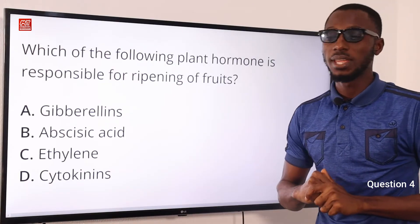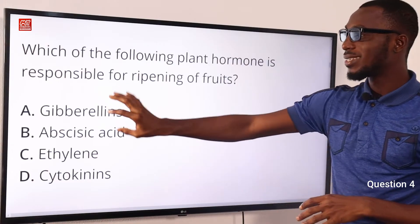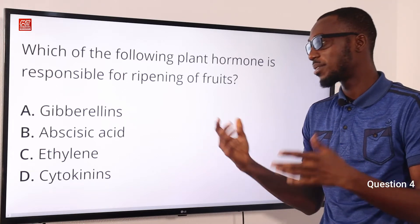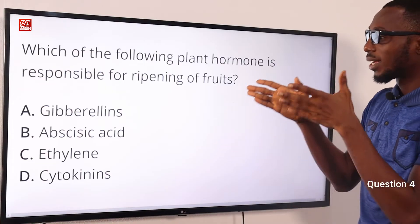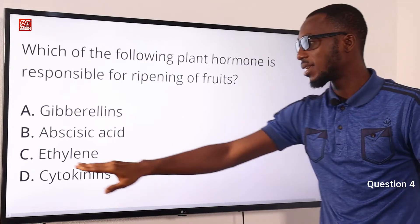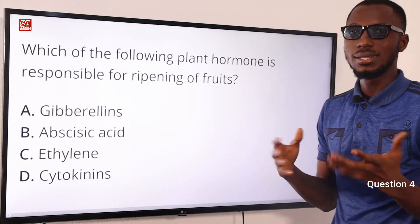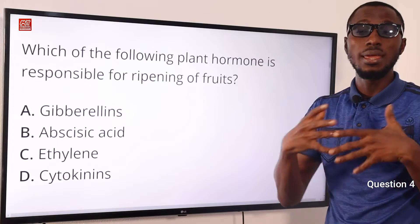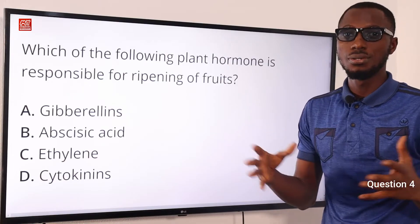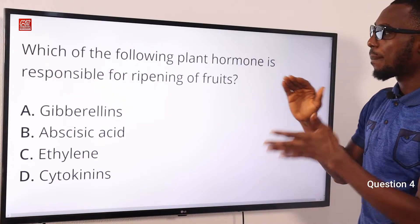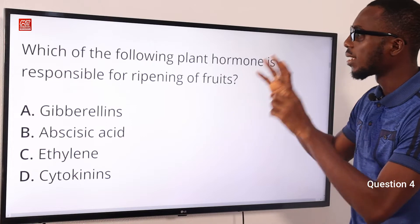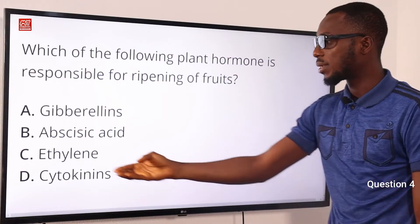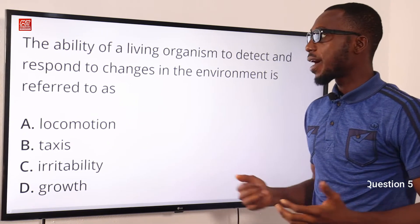Question 4: Which of the following plant hormones is responsible for ripening of fruit? Gibberellins and auxins are growth hormones responsible for cell elongation. The hormone responsible for fruit ripening is ethylene. It exists in gaseous form, is responsible for ripening of fruit, and also inhibits cell elongation. The correct option is C: ethylene.